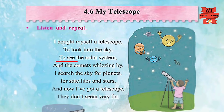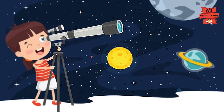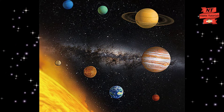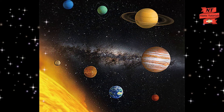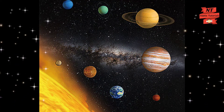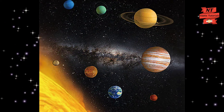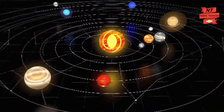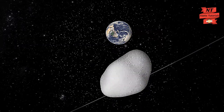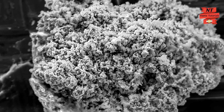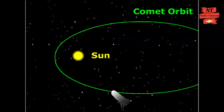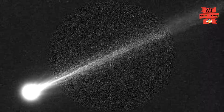The little boy wants to see the solar system. The solar system consists of the Sun, the eight planets, moons, and other small objects that constantly move around the Sun. A comet is a mass of ice, dust, and rocky particles with a long tail that travels around the Sun. It moves very rapidly, hence makes a whizzing sound.